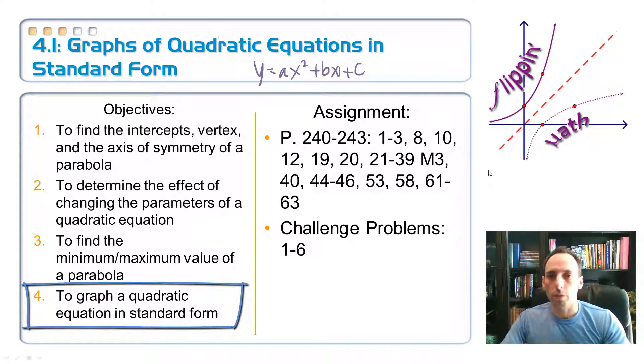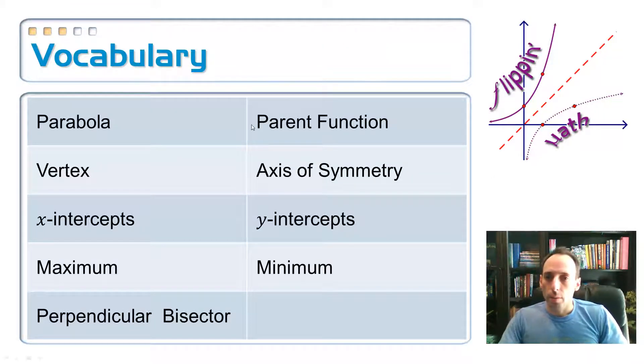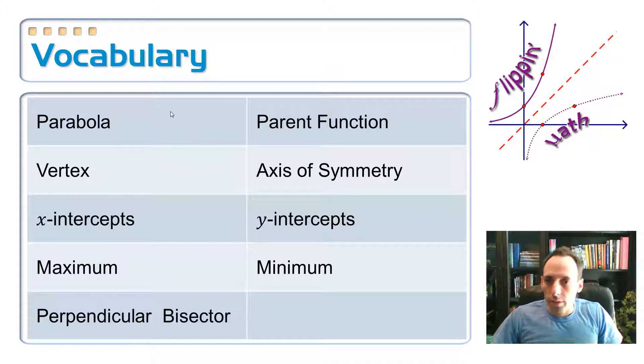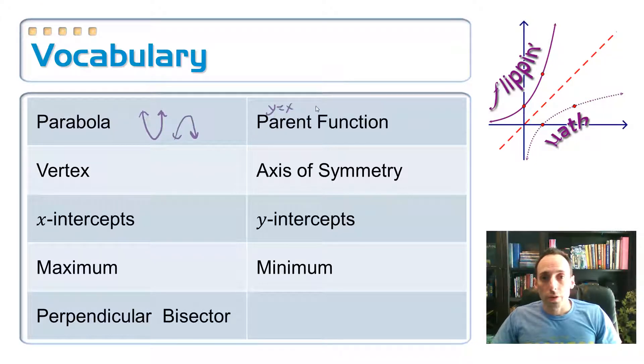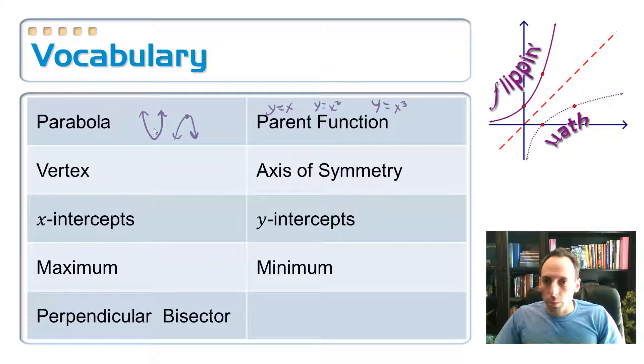Let's look at some vocabulary. What is a parabola? A parabola is that kind of U-shape - it could look like this or maybe it could be upside down. Parent function is the simplest member of a group or set of functions. Like y equals x is the linear parent function, y equals x squared is the quadratic, y equals x cubed is the cubic, and so on. Vertex is the little turning point on our parabola. Axis of symmetry is going to cut this thing right in half.